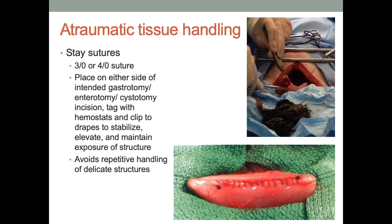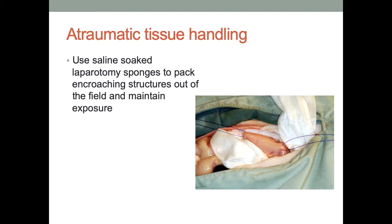Stay sutures: any time I can't see well, stay sutures go in. If I'm worried about spillage, stay sutures go in. If I'm putting a continuous line into a viscous organ and want the tissue stretched out to run my line nicely, I put in two stay sutures clipped out to the drape or held by mosquito forceps over your retractors — you don't need someone holding it. Packing with saline-soaked sponges holds things out of the way, prevents desiccation, catches any bacterial seepage — just keep track of them.